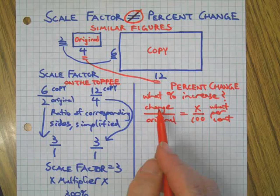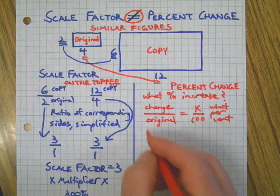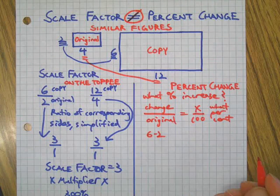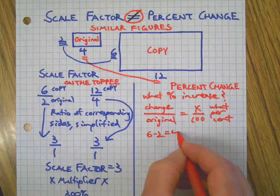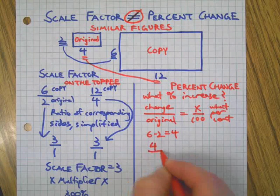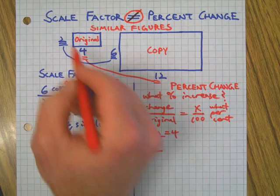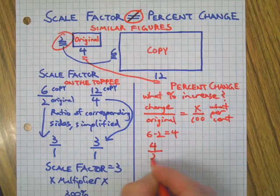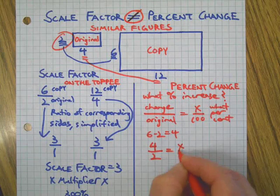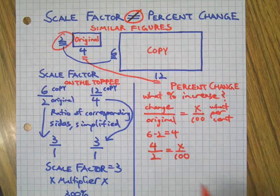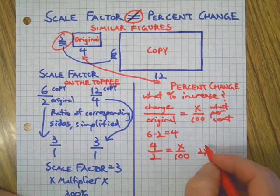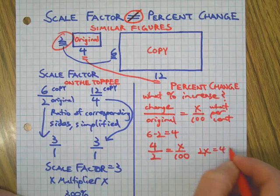Okay, so for percent change we need to know how much it changes. So for example, if we take our pair of corresponding sides, we take 6 minus 2 equals 4, so it changes by 4. The original is 2, you can see how this is going to be different already, right? Then we could cross multiply and solve. We don't need to really in this case, but on a problem that's not this simple, of course this would be a good strategy for you.